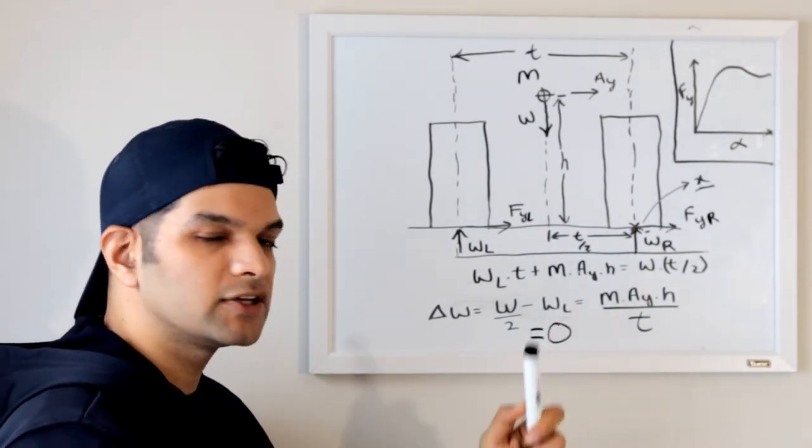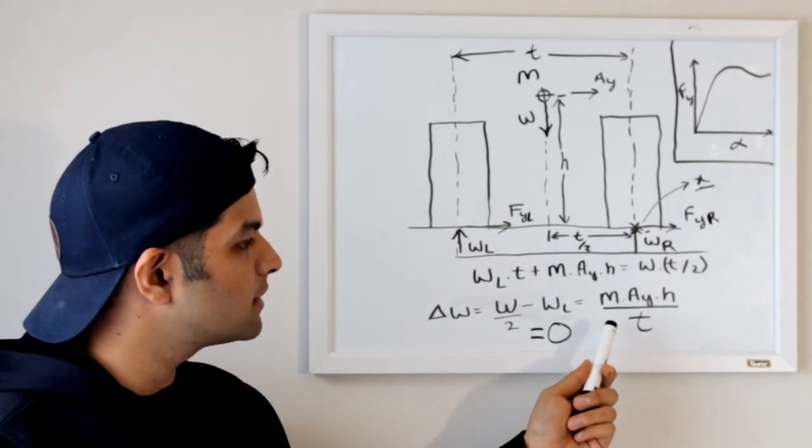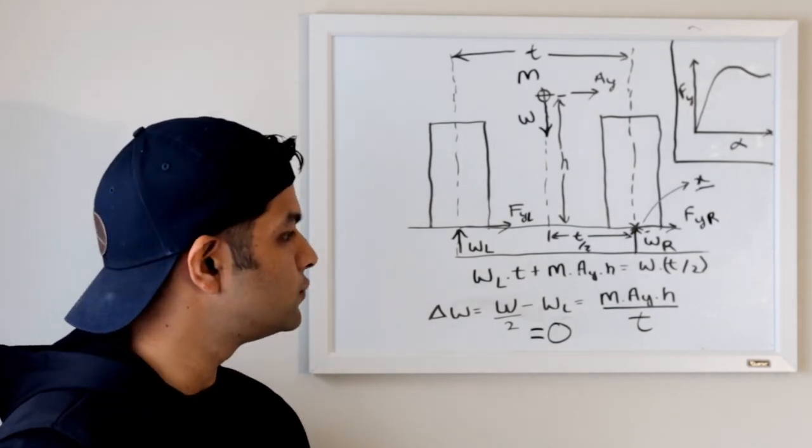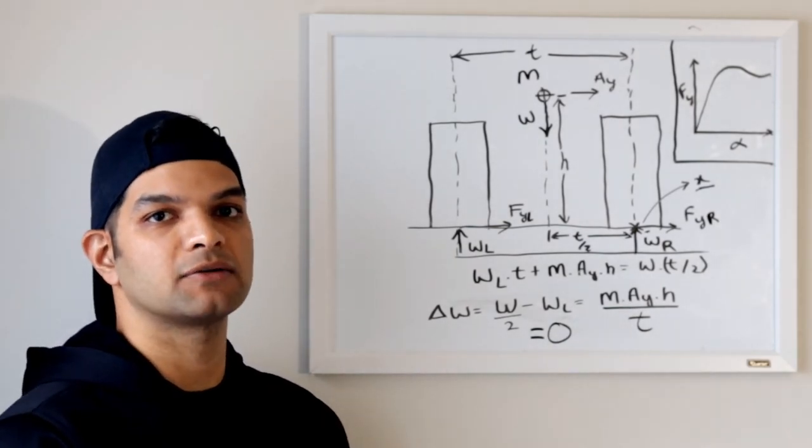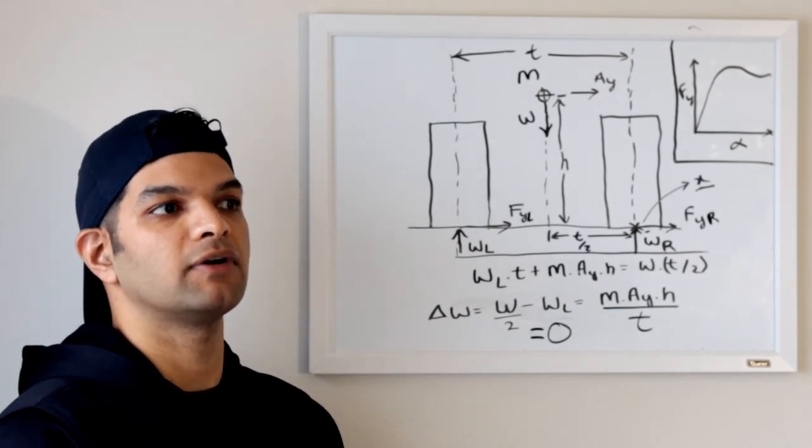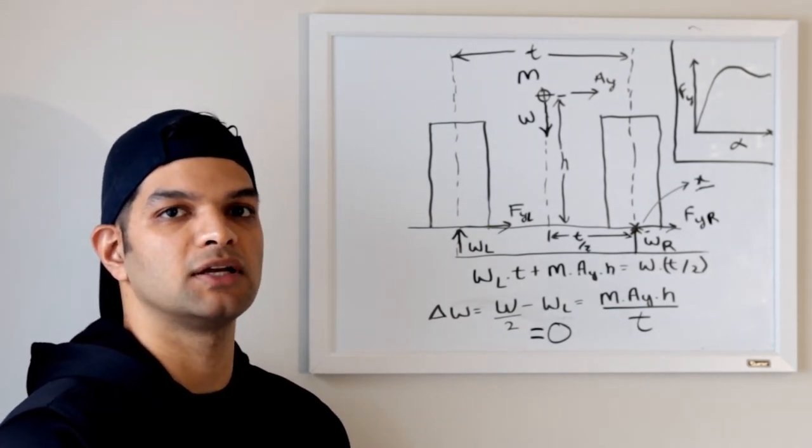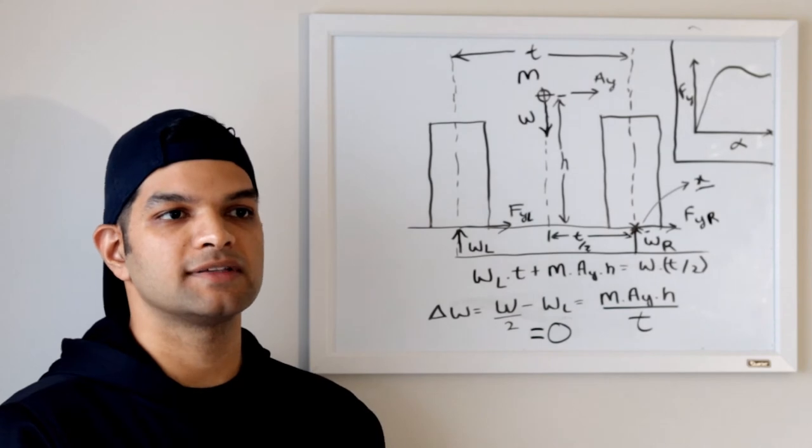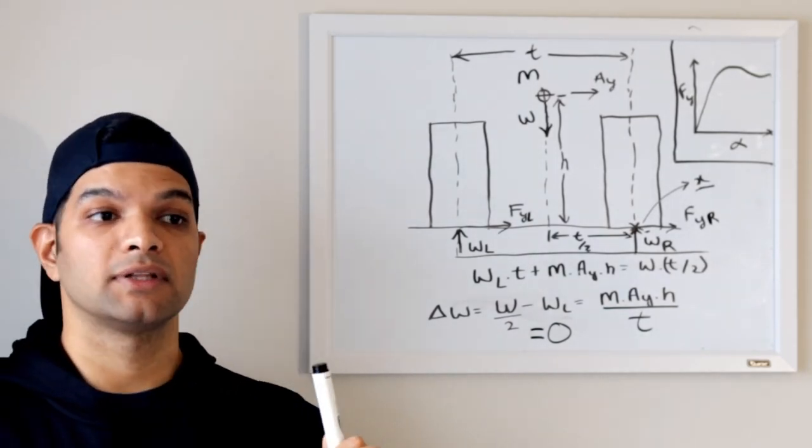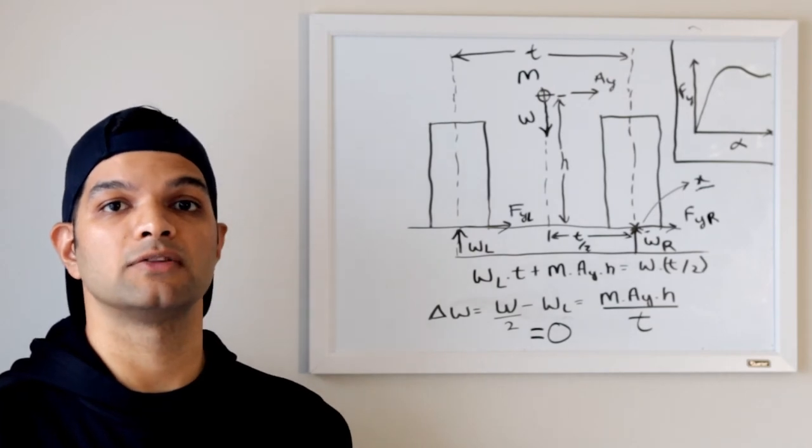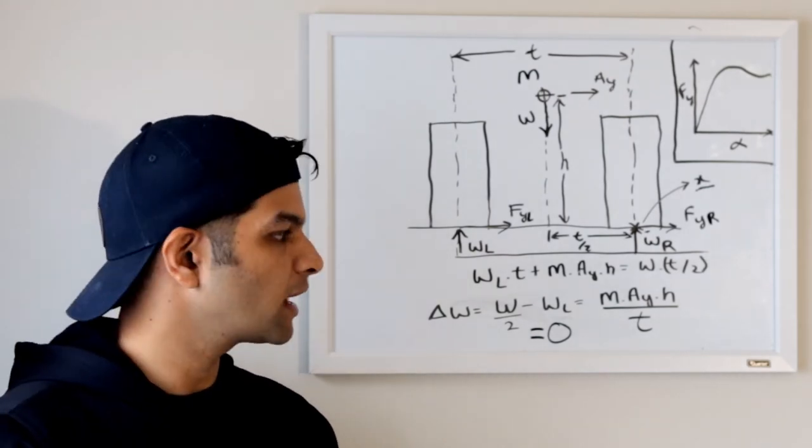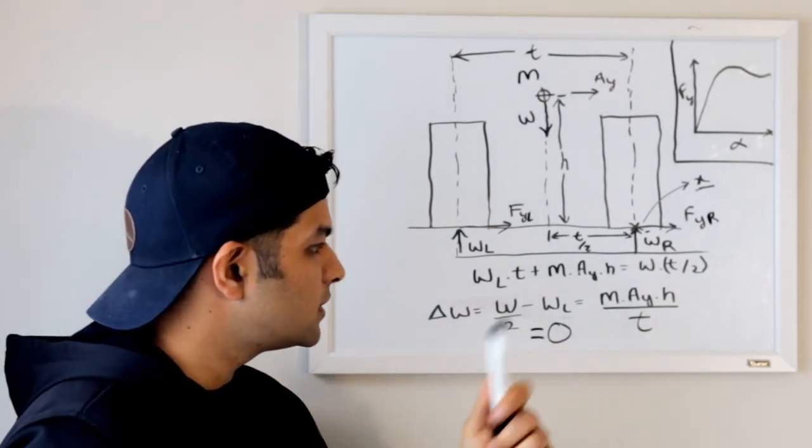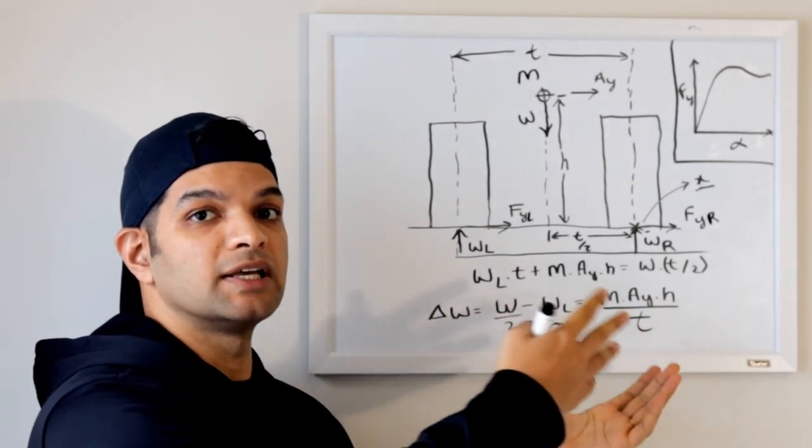But if you look on this side of the expression, what does that mean? This means that only one value over here which can make this lateral load transfer as zero, which would be lateral acceleration. Mass, height of the center of gravity and track width are constant values. These are properties of the vehicle, of our suspension geometry. So those are going to be there. The only thing which can change is lateral acceleration. What does that mean? Whenever we are making turns with a car with no coil springs or coil springs which are super stiff, our vehicle is going to understeer and we are going straight into the barriers without making the turn. So that's what this expression tells us.